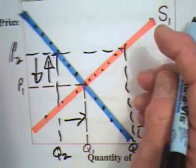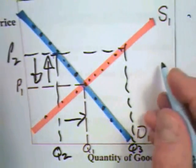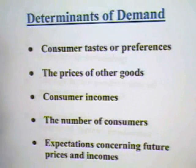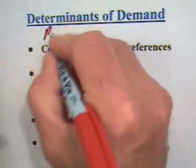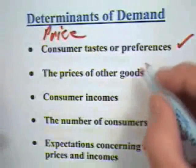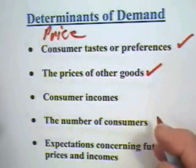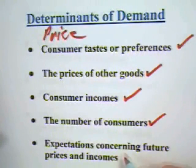Now, price is not the only determinant of how much consumers are willing and able to buy of a good. As indicated in other video modules and the textbook, demand can be influenced by a host of factors. Price, of course, is one factor, but consumer tastes and preferences is another. The price of other goods, whether they're complements or substitutes, is important. Consumer incomes are important. The number of consumers are important. And the expectations concerning future prices and incomes affect current demand for a good.